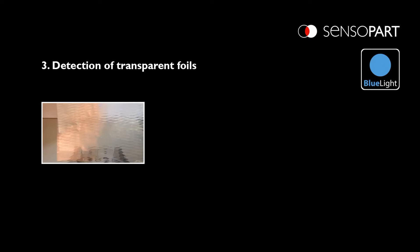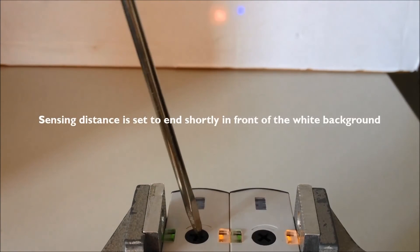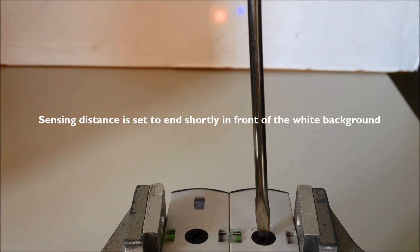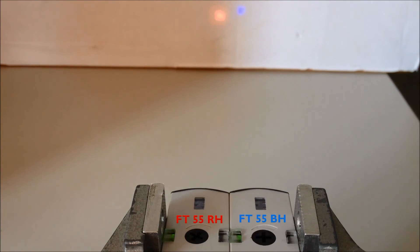Next we'll show with transparent foils and this would even work with the thinnest saran wrap. And again we adjust the knob until the output light goes off on both sensors to ignore the background.